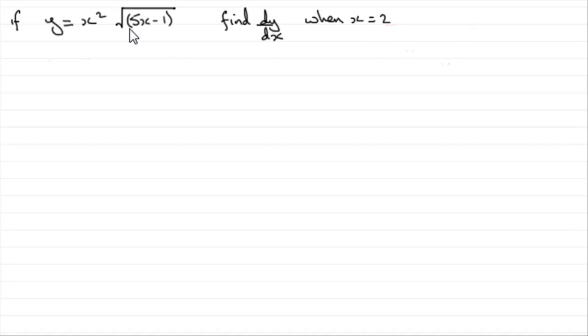Now to do this, first of all, what I want to do is change this square root here to a power. So we can rewrite this as y equals x squared times 5x minus 1 all to the power of half. If it was the cube root of x, it would be to the power of third and so on. So basically we've got y equals x squared times 5x minus 1 to the half.